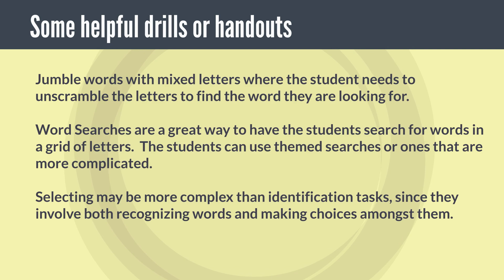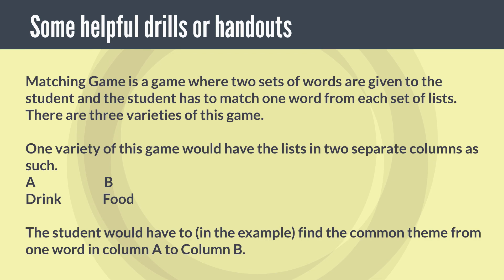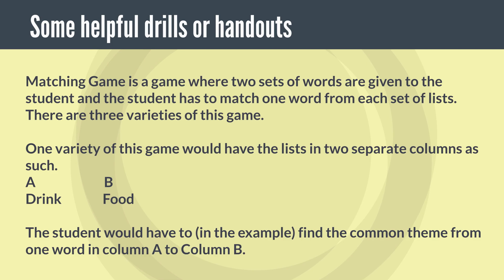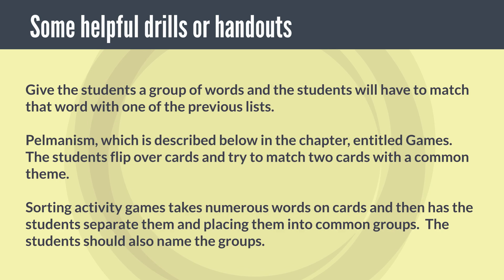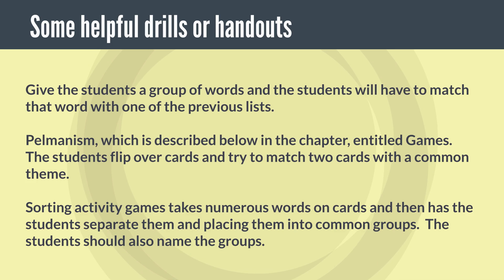Selecting tasks may be more complex than identification tasks since they involve both recognizing words and making choices amongst them. A matching game gives two sets of words to the student who must match one word from each set. One variety has the lists in two separate columns — for example, drink and food — and the student finds the common theme from column A to column B. There is also Pelmanism, where students flip over cards and try to match two cards with a common theme. Sorting activity games use numerous words on cards and have the student separate them into common groups, which the students should also name.